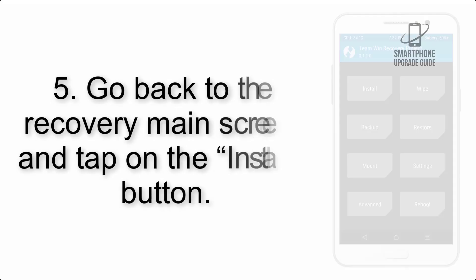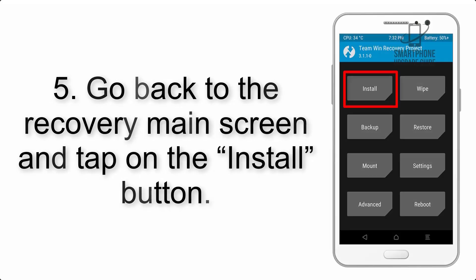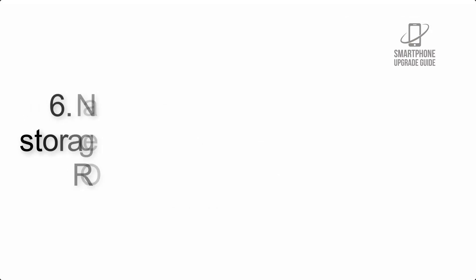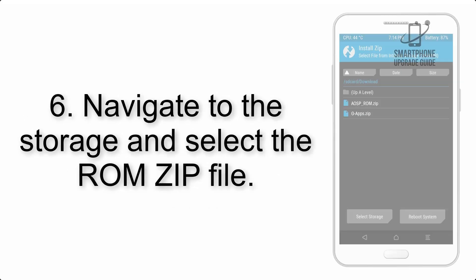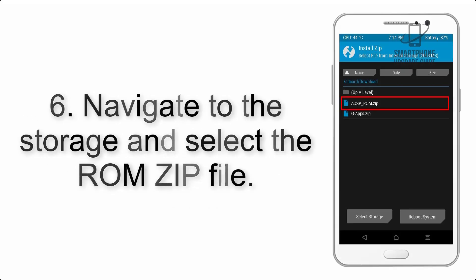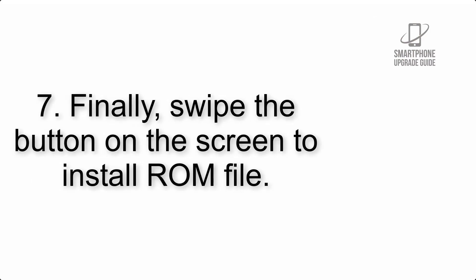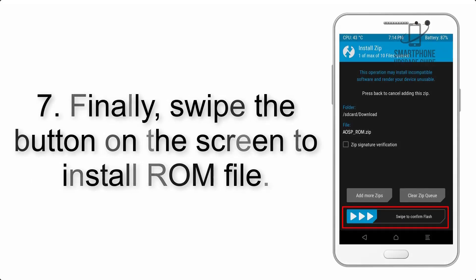Step 5: Go back to the recovery main screen and tap on the Install button. Step 6: Navigate to the storage and select the ROM zip file. Step 7: Finally, swipe the button on the screen to install the ROM file.